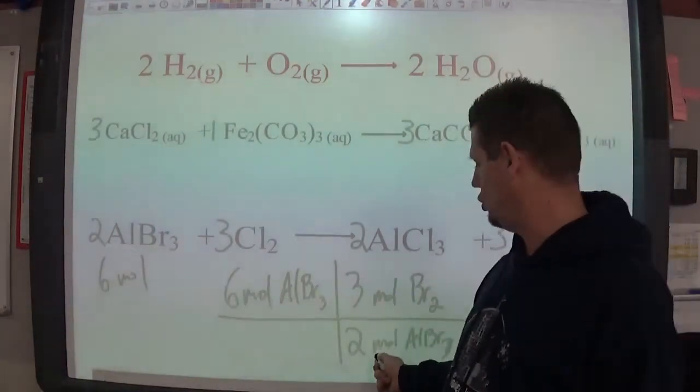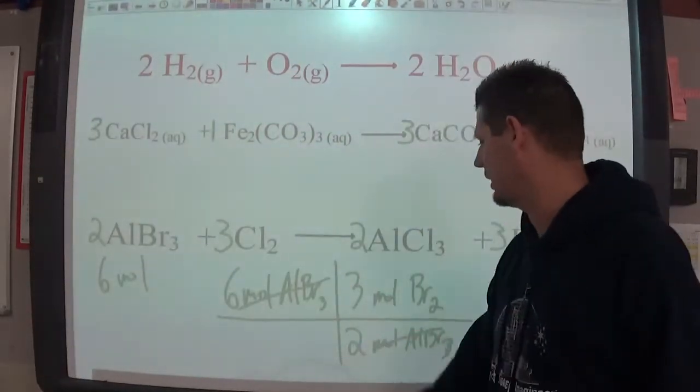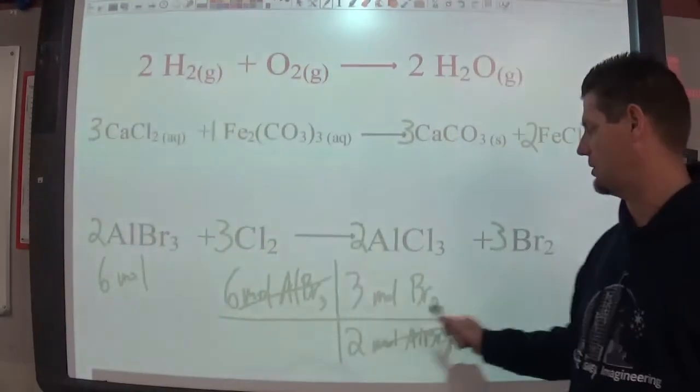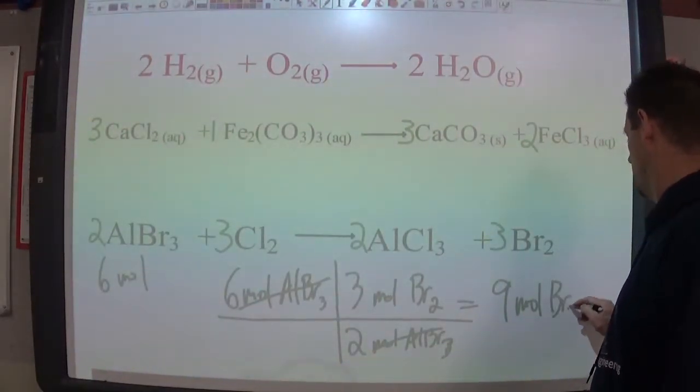So the ratio is two to three and now I just do math. The moles of aluminum bromide are going to cancel. I take six times three divided by two and hopefully you've realized the answer will be nine moles of Br2.